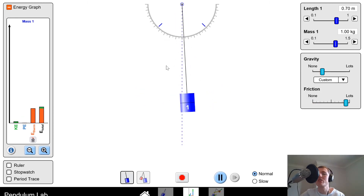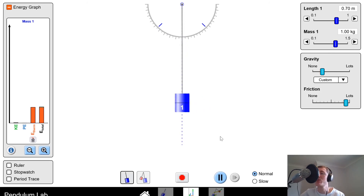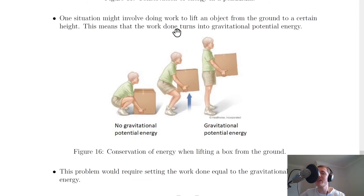If friction is increased, air resistance acts on the mass and the oscillations get smaller and smaller, eventually coming to a stop — which is what happens in real life.